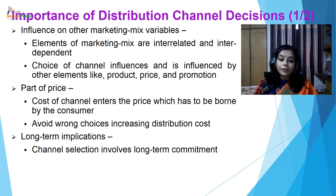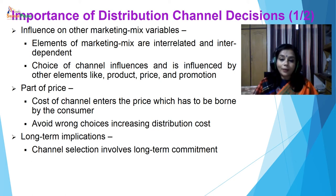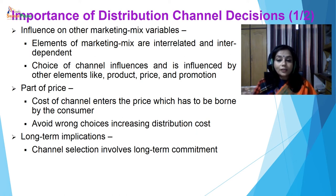This is a very important decision and it should be created with great care. The first thing is that it influences other marketing mix variables. Each of the marketing mix variables has an impact on all others. Where you are positioning the product will decide everything — from product quality to price to physical distribution decision. Choice of channel influences and is influenced by other elements like product, price and promotion. The cost of channel enters into the price which is ultimately borne by the consumer. So avoid any wrong choices because that will increase the distribution cost, affect demand, and cause the customer to not buy the product.